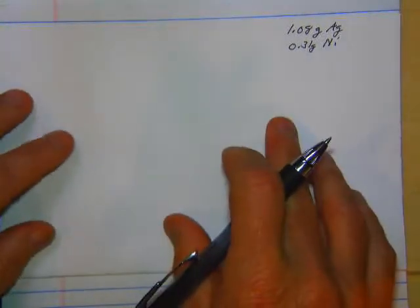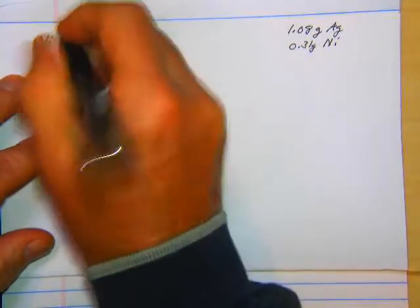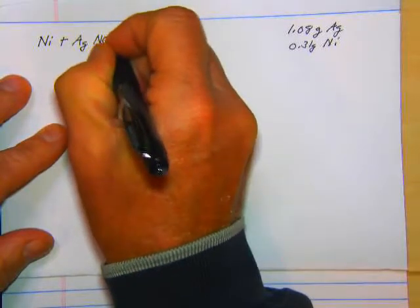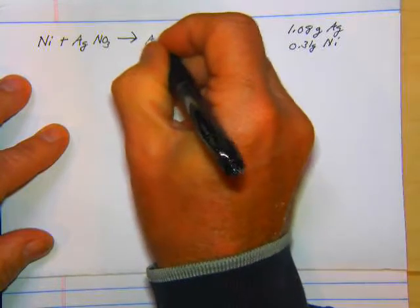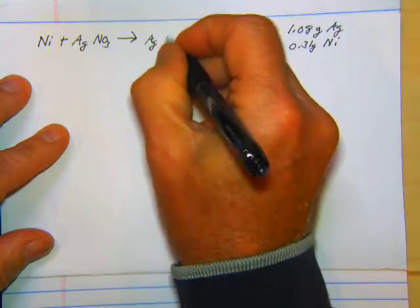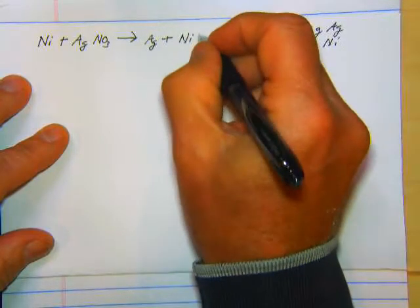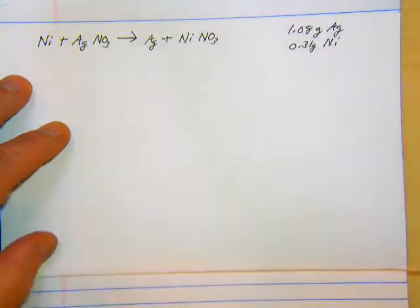First thing we need to do is write a balanced equation. So we had nickel reacting with silver nitrate, AgNO₃. And that gave us silver, Ag, plus nickel nitrate.